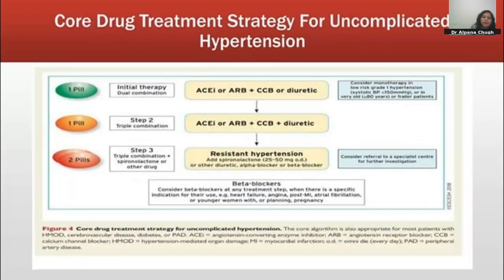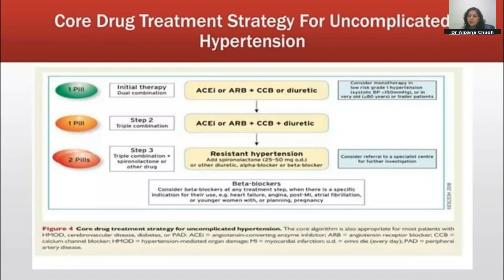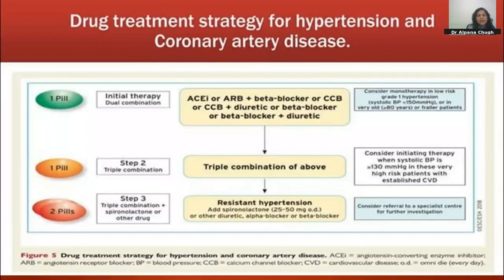The treatment algorithm: start with a dual combination in a single pill — either ACE or ARB with a CCB or diuretic. If not controlled, step two is ACE or ARB with a CCB plus a diuretic (triple drug combination). If still uncontrolled, label as resistant hypertension and add spironolactone, an alpha blocker, or a beta blocker, and refer the patient. Monotherapy is considered only for low-risk Grade 1 hypertension or very old patients. For patients with coronary artery disease, beta blockers or CCBs can replace diuretics in the first line.